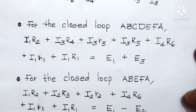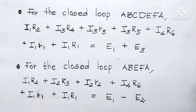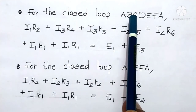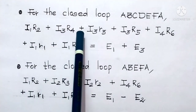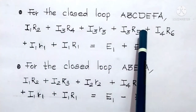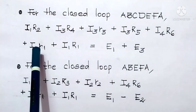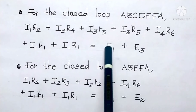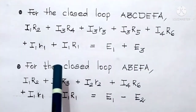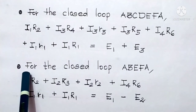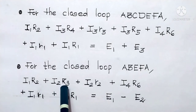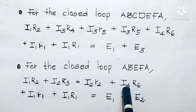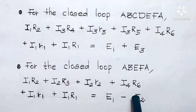Now let us see the equation. For the closed loop A, B, C, D, E, F, A: I1 R2 plus I3 R4 plus I3 r3 plus I3 R5 plus I4 R6 plus I4 r1 plus I1 R1 is equal to E1 minus E2.